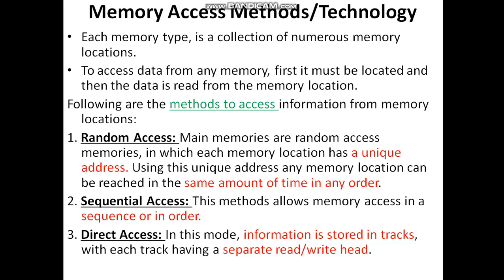In sequential access, there should be a specific order of addresses. For example, if 2001 is the address, that address should be accessed first, then 2002, then 2003 — it should follow sequential order. In the case of direct access, there is nothing like sequential addressing. The data should be stored directly onto a track, and that specific track will have separate read and write heads so it can be read and written separately.